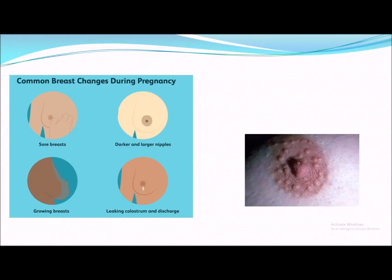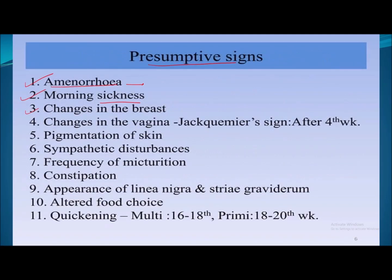Breast changes are also presumptive signs: sore breasts, dark and larger nipples, growing breast size, leaking and discharge, and multiple tubercles around the areola known as Montgomery tubercles — these are enlarged sebaceous glands seen in pregnancy.